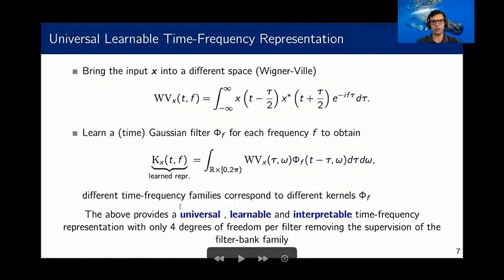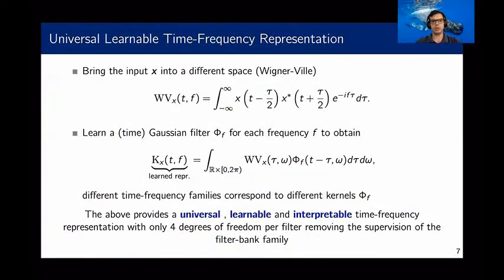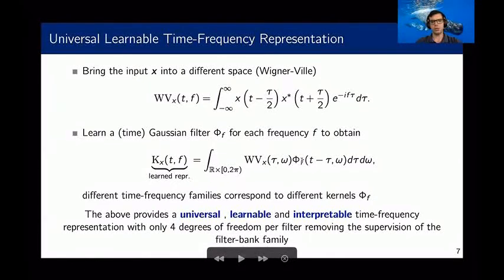This means that one can now reach any desired time frequency family only by learning four parameters for each filter of the filter bank. In general, in most tasks the filter bank is composed of between 80 to 120 filters. So it does not introduce a lot of degrees of freedom, and still it can represent most of the currently used time frequency representations, interpolate in between, and go beyond them by reaching super-resolution, meaning that you can have much more precise time and frequency resolution than commonly used representations.